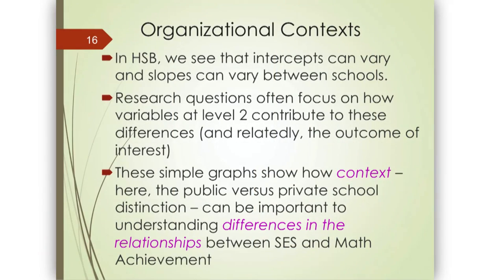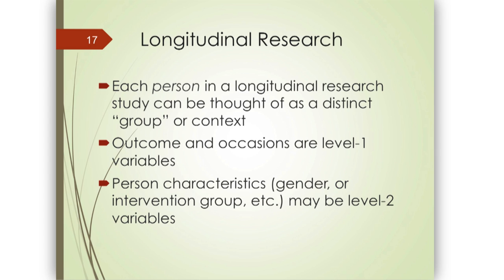Slopes and intercepts can vary, and our research questions in multi-level analyses tend to focus on those level-2 cluster variables that can help explain those differences. That's what typically tends to be of value — understanding differences in the relationships occurring at the lower level. Longitudinal data we can treat the same way: each person is a different group or context sampled from a larger population, with repeated measures as the lower-level observations. Person characteristics are level-2 variables.